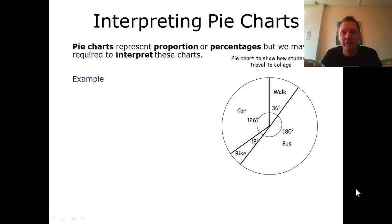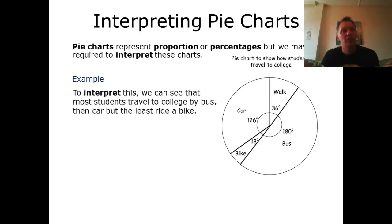As an example here I've got a pie chart showing the degrees and different categories, so how students travel to college - those who walk, bus, bike, and take their car. To interpret this I can automatically say that more people who were surveyed take the bus to college than anything else and the least many people ride a bike.